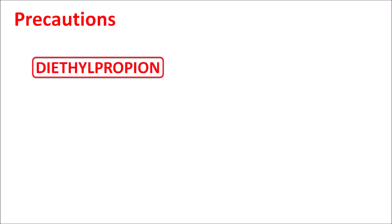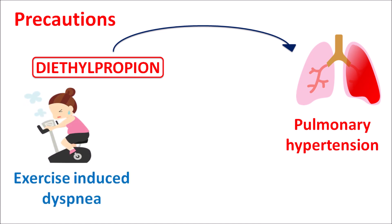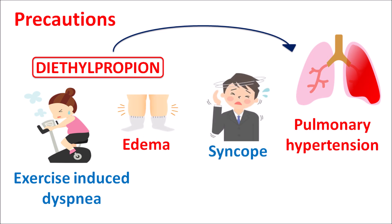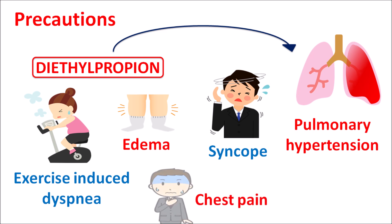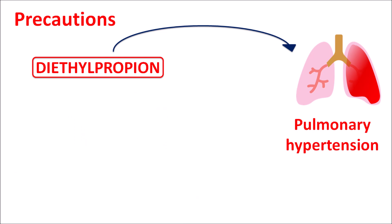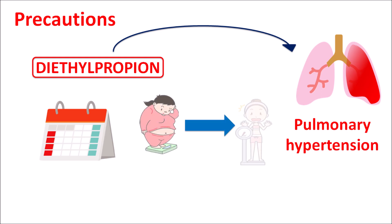Now let us look at the precautions of this drug. One important precaution is that diethylpropion acts on the sympathetic system, so it can increase blood pressure — particularly, it can increase pulmonary hypertension. This can manifest as increased exercise-induced dyspnea, difficulty in breathing, edema particularly at the lower extremities, syncope, and even increased symptoms of angina pectoris resulting in chest pain and a squeezing sensation. These symptoms are mainly observed with long-term treatment, which is why this drug should be used only for short-term treatment. Within this period, there should be a significant difference in weight loss; if significant weight loss is not observed, diethylpropion should not be continued.